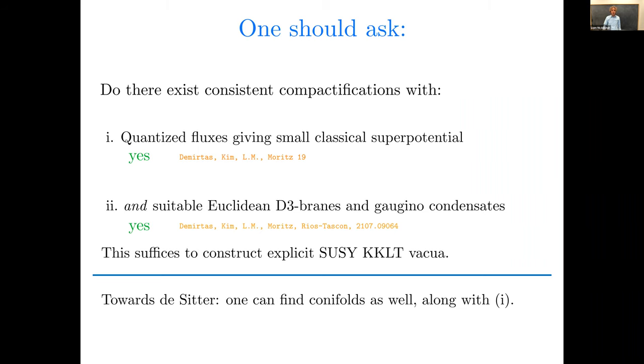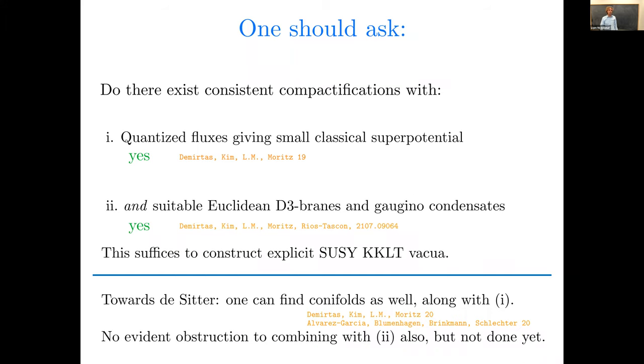First, we've shown that in 2019, and now, yes, for the second one as well. There was certainly a lot of work, great progress on studying Euclidean D3 brane and gaugino condensate superpotential terms over the last 20 years. What I mean here by particularly by saying that we have now shown that there exist consistent compactifications with this property is with conditions one and two, namely a suitable Kähler moduli superpotential, as well as a small w naught. Now, these conditions suffice to construct explicit well-controlled supersymmetric KKLT vacua. That's what I'll be showing you. And that's enough for today's talk, but let me draw a line there and say, another thing you could do is you could try to go toward de Sitter.